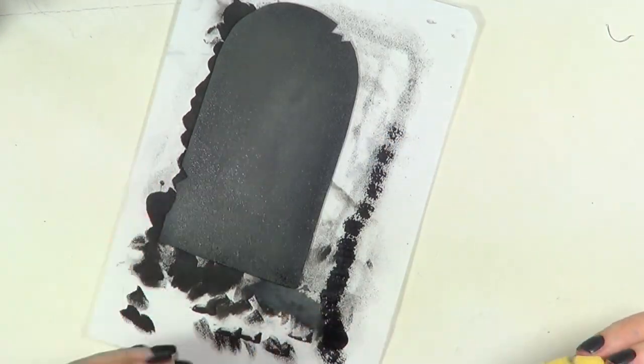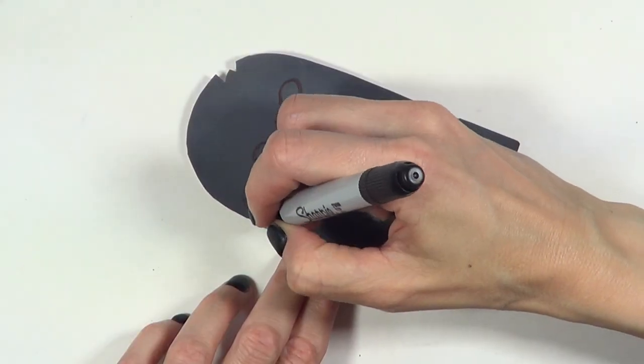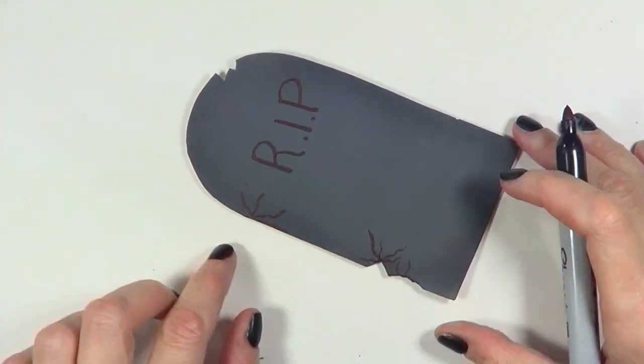And then I'm going to be writing RIP and all that, adding details. I wish I would have started the R more towards the left so everything looked more centered.